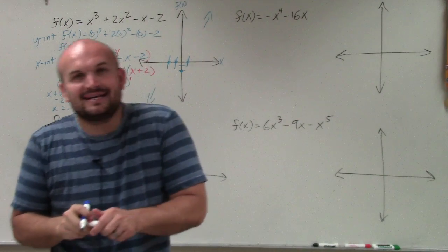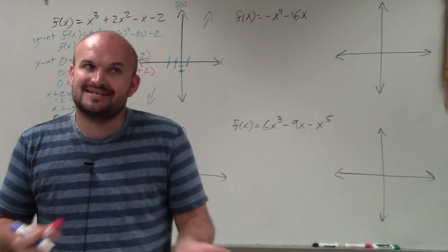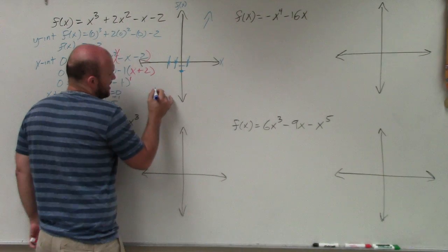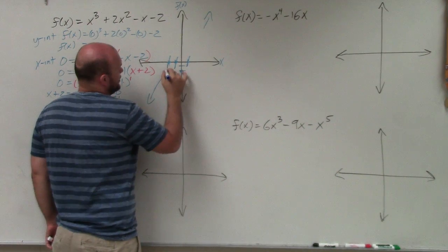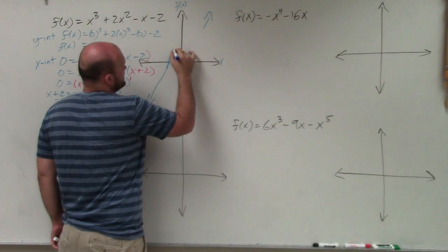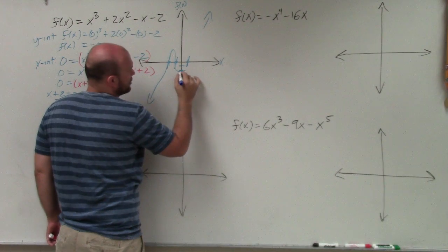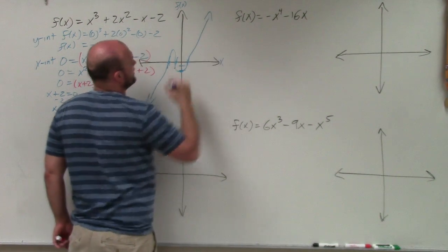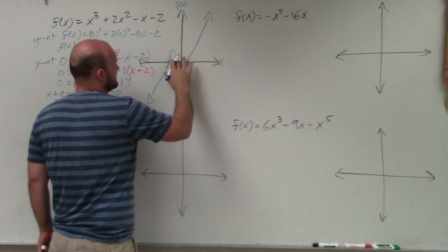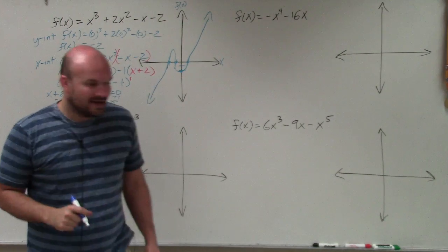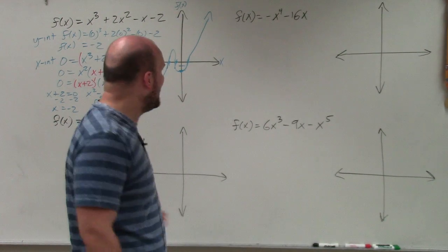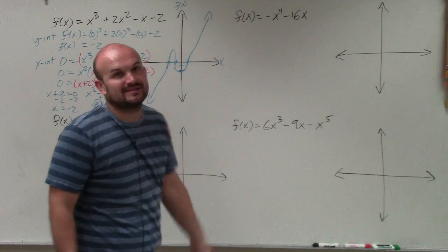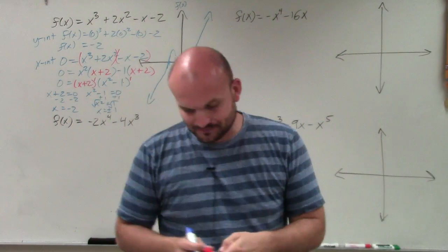So now to graph it — calculators are nice and easy, but this isn't too bad; it's kind of like a game. You're going to start with your end behavior, go through your first zero, go through the next zero, cross the y-intercept, go through the next intercept, and then graph. It doesn't look as pretty as it possibly could, but you can obviously see we have our three zeros and the y-intercept, and we're all good.